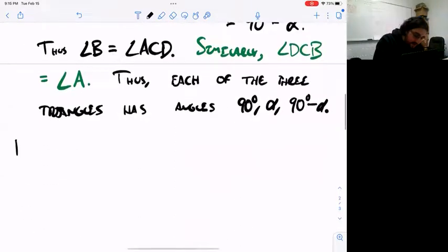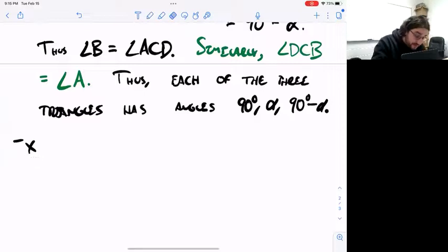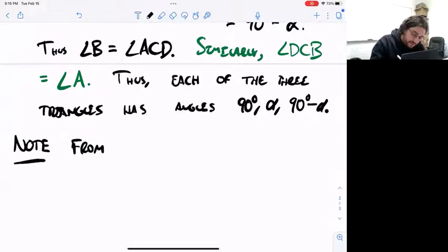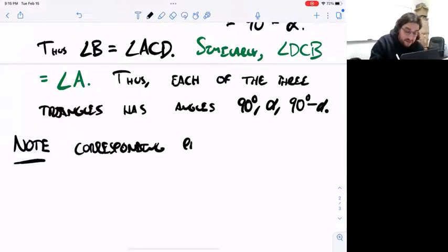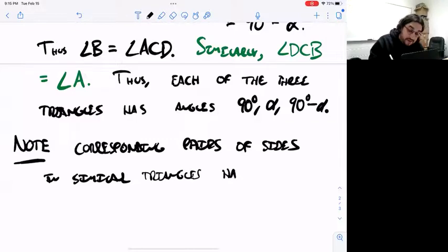And so then here's an example based on this, to show how you could use this similarity. This is a consequence of similarity. Corresponding pairs of sides in similar triangles have equal ratios.